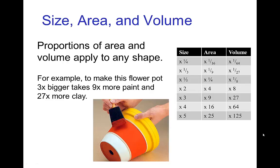This relationship among area, volume, and size is the same no matter what the shape of the object. For example, if we have a flower pot and make another flower pot with exactly the same shape but three times the size — three times taller, same proportions — then that flower pot will have nine times the area, so it would take nine times more paint to paint it, and twenty-seven times the volume, so it would take twenty-seven times more clay to make it.